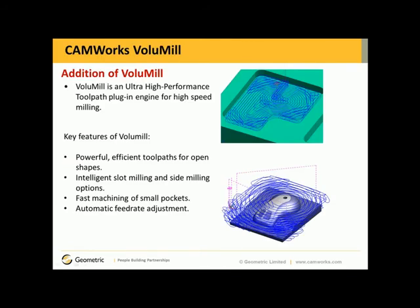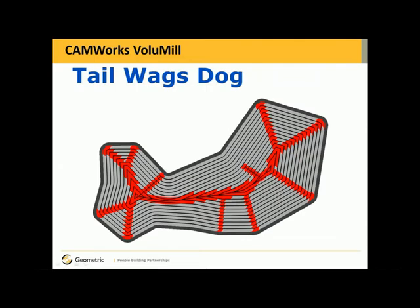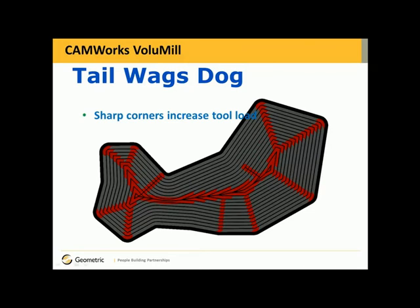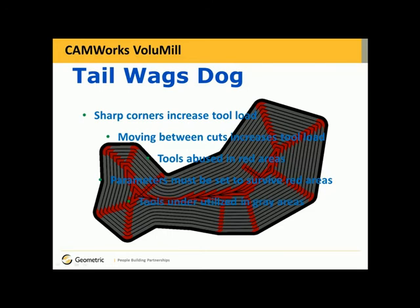What is Volume Mill? It's an ultra-high-performance toolpath plug-in engine for high-speed milling. Key features include efficient toolpaths for open shapes, intelligent slot milling and side milling options, fast machining of small pockets, and automatic feed rate adjustment. With a standard toolpath, sharp corners increase tool load, moving between cuts increases tool load, and tool abuse occurs in the red areas. Parameters must be set to survive those red areas, meaning feeds and speeds all have to be slowed down, and tools are underutilized in the gray areas.